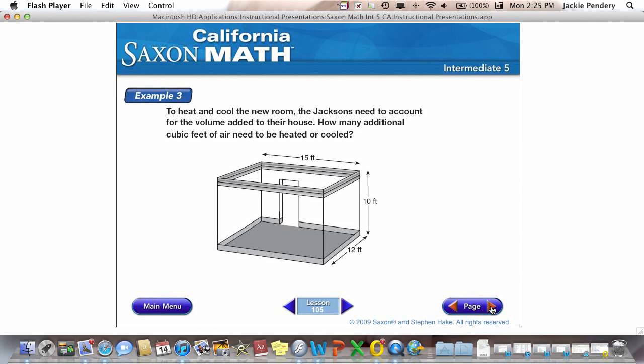Okay? So example three, the Jacksons now have crown molding. They're getting ready to put in carpet, but now they need to account for the additional volume added to their house to heat and cool it. So how many additional cubic feet of air need to be heated and cooled. So I know that because they give me the hint, cubic feet, and that I'm not just air conditioning the floor, or a wall, or the ceiling, but the interior of the room, I know that this will be a volume problem.